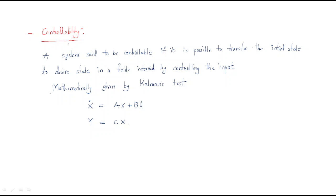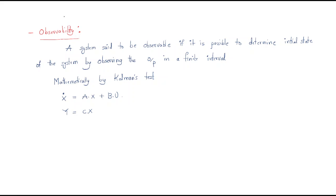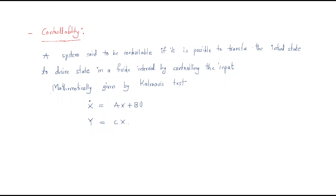Hello everyone. In this session we will discuss two topics related to state space analysis: controllability and observability. First, what is controllability? A system is said to be controllable if it is possible to transfer the initial state to the desired state in a finite interval of time.